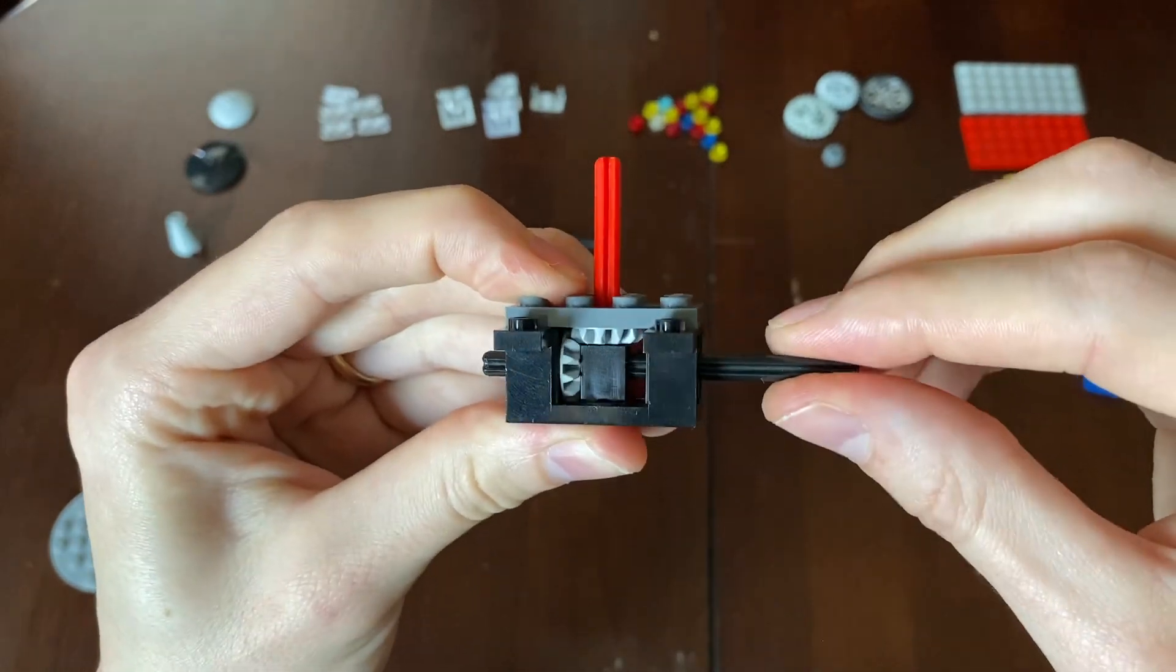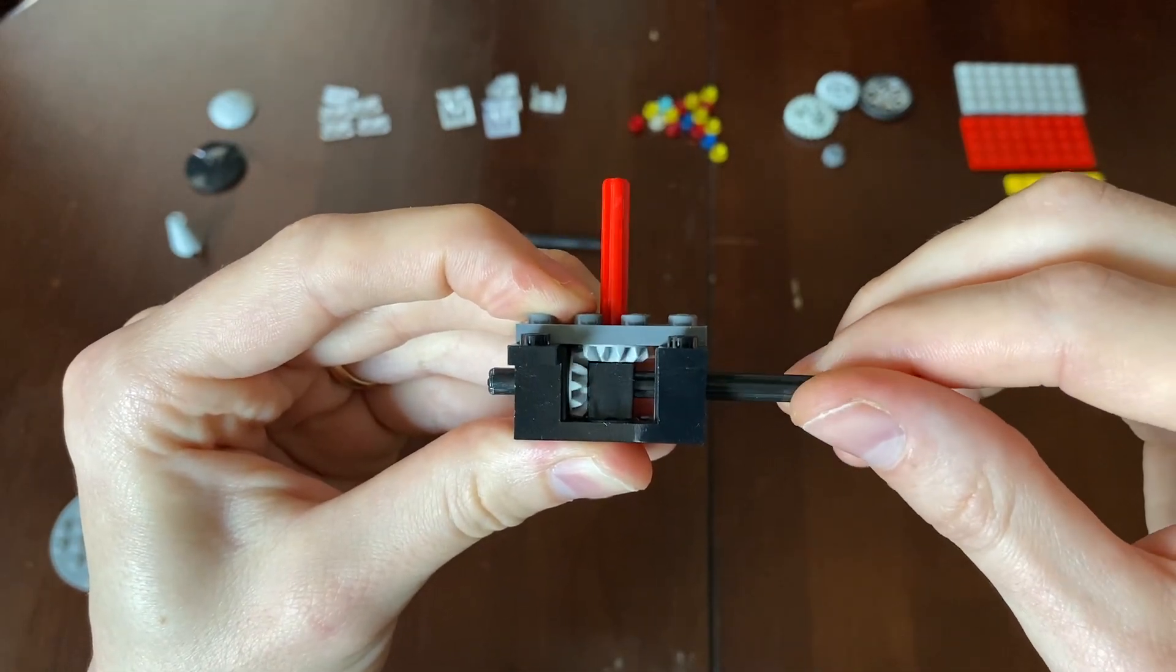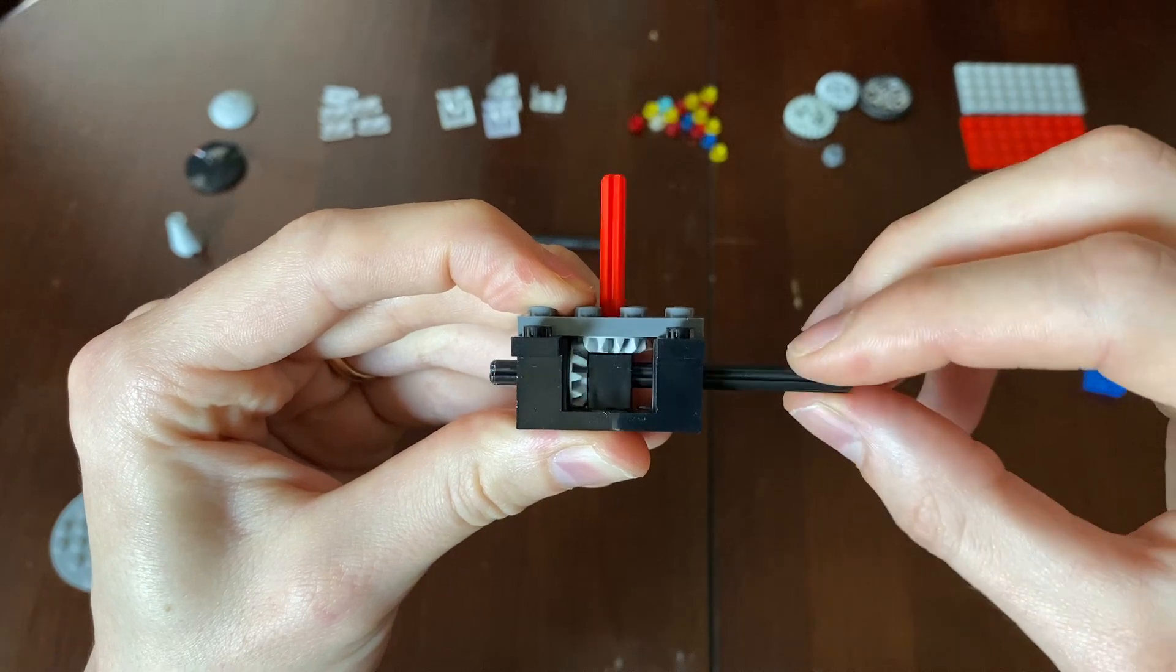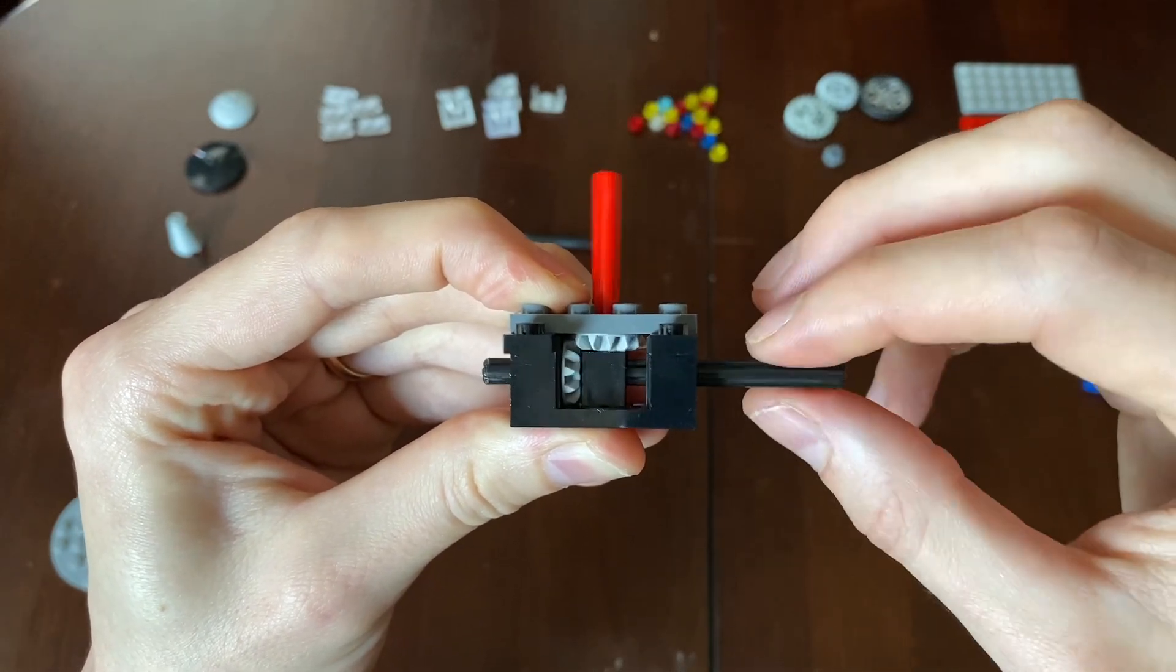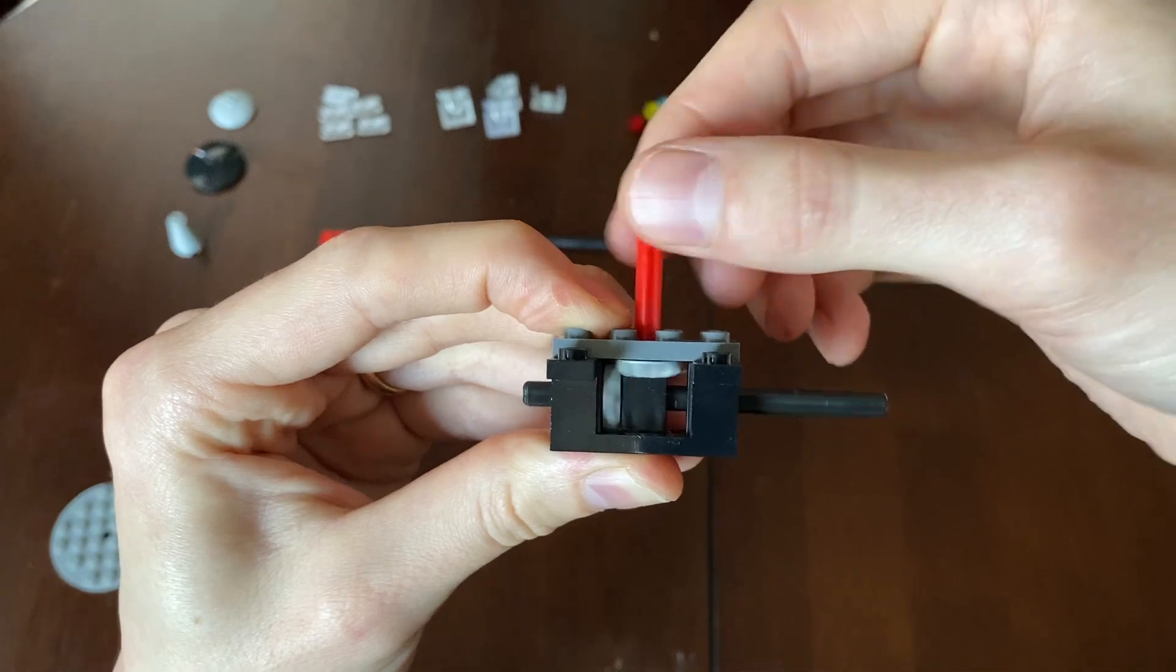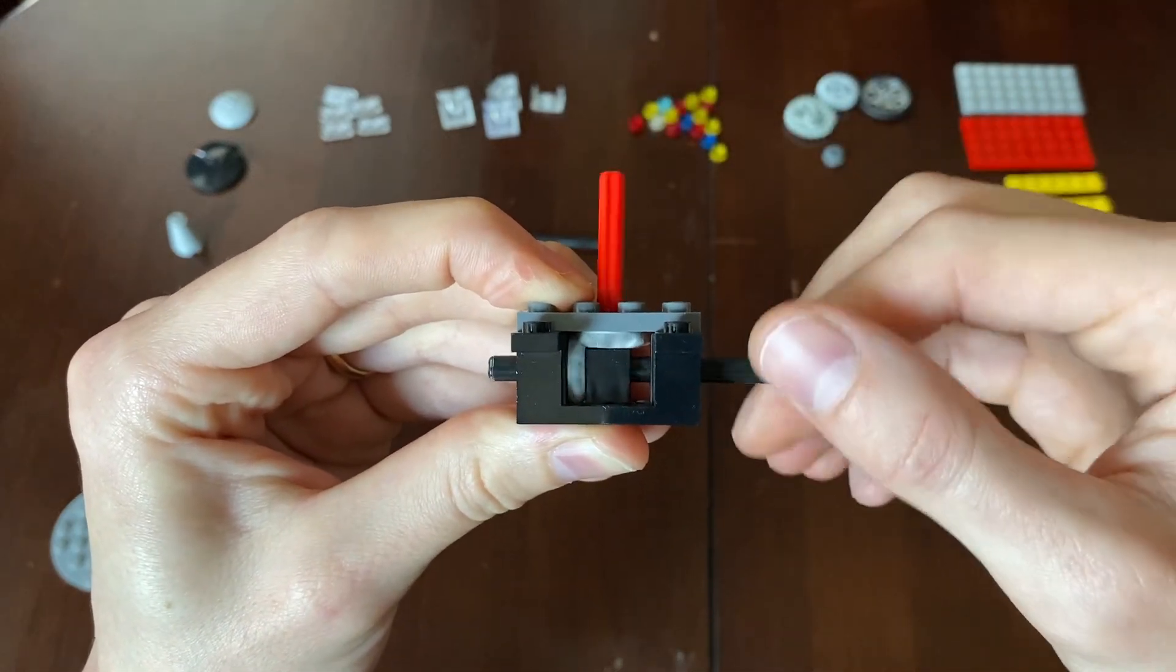And now we're going to take this whole thing and put it right here. So this is the basic mechanism in our machine today. Two axles, turn one, and it spins the other at 90 degrees. Very cool.